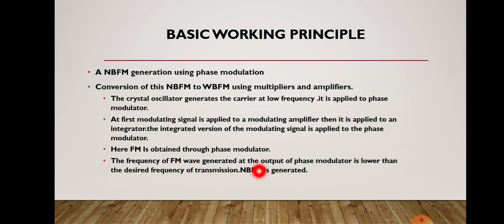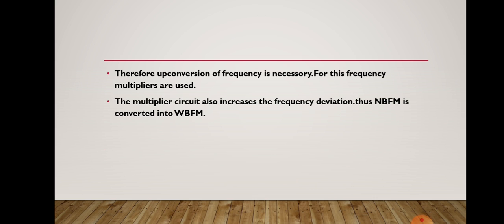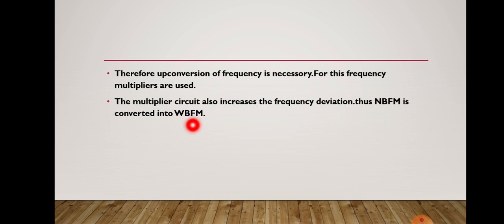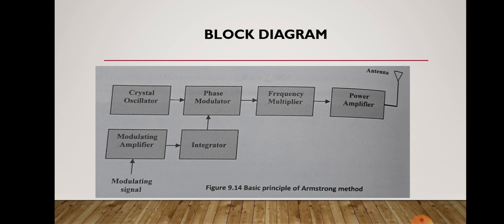The frequency of the FM wave generated at the output of the phase modulator is lower than the desired frequency of transmission — that means narrow band FM is generated. Therefore, up-conversion of the frequency is necessary. For this, frequency multipliers are used, and this multiplier circuit also increases the frequency deviation. Thus, narrow band FM is converted into wide band FM. Then that wide band FM signal is applied to the power amplifier to boost the power, and then it is transmitted through the transmitting antenna.